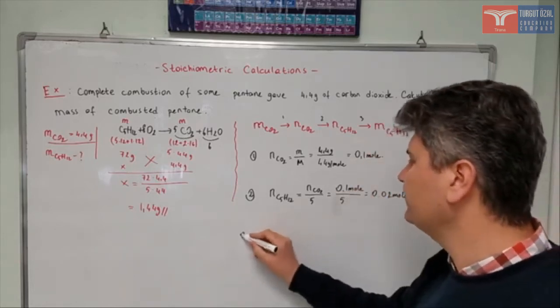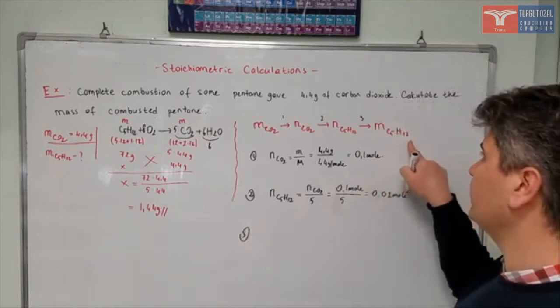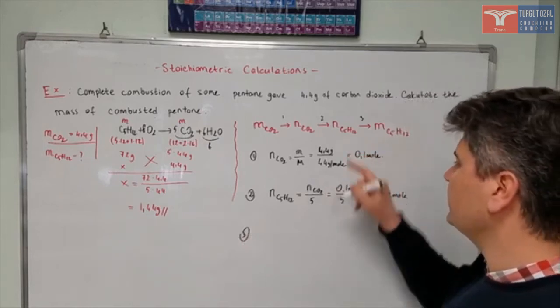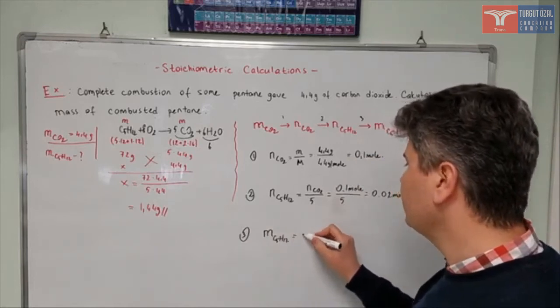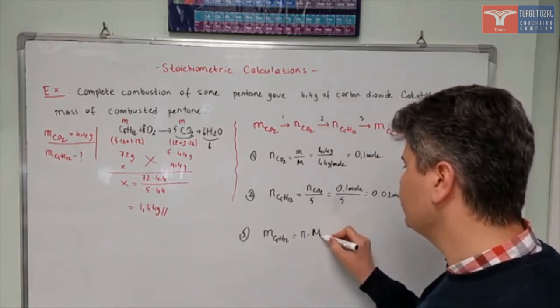And the final step is to find the mass of our required compound, pentane, from its mole number. Mass of pentane C5H12 is equal to mole number times its molar mass.